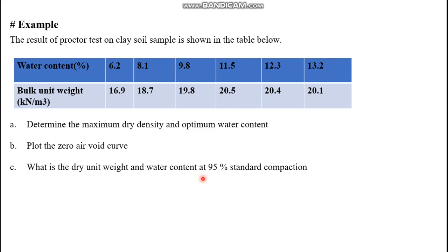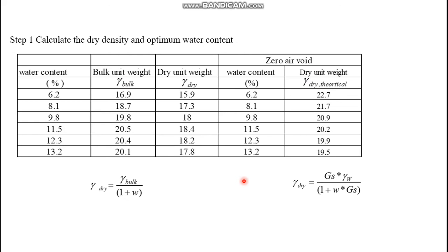Now let's look at a practical example. We are given a clay soil sample with different water content values and bulk unit weight results. We are required to determine the maximum dry density and optimum water content, plot the zero air void curve (the theoretical maximum dry density, representing conditions where all voids are filled with water), and determine the water content and dry density at 95% of standard compaction. The first step is to construct a table with water content, bulk unit weight, dry unit weight, and zero air void curve values.